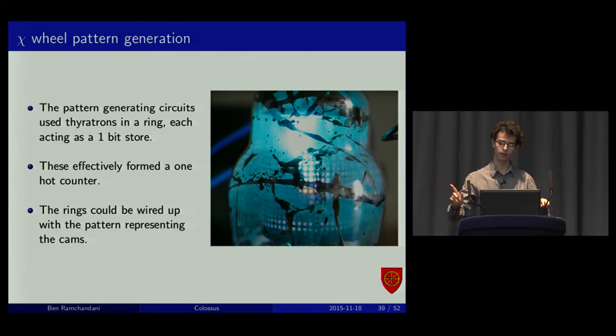These were used in a ring and this generated the chi wheel pattern. It was like a one-hot. So, you sparked one of them and that sparked the next and quenched itself. It sparked the next and quenched itself. And you could wire these up with the cam settings you had. And that allowed you to generate the patterns. These ran pretty fast. It was 5,000 times a second. It was the clock speed, basically.